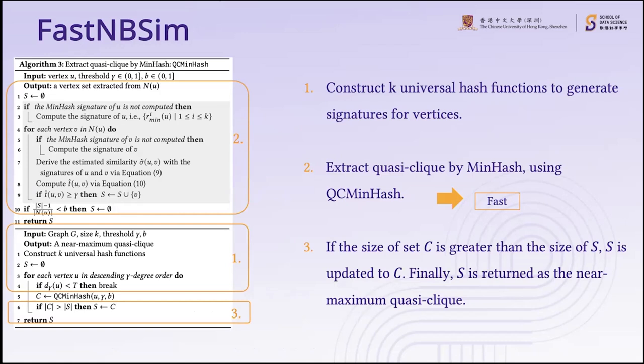Fast-MBSM works similarly to MBSM. It first constructs k universal hash functions to generate signatures for vertices, then extracts quasi-cliques using QC-MinHash. QC-MinHash works like QC-Extract: it computes the signature of a vertex if not already computed, derives the estimated similarity from the two vertices' signatures, and approximates the containment score via the transformation function, then returns the set. The resulting set is used to update S, which is returned as the near-maximal quasi-clique.